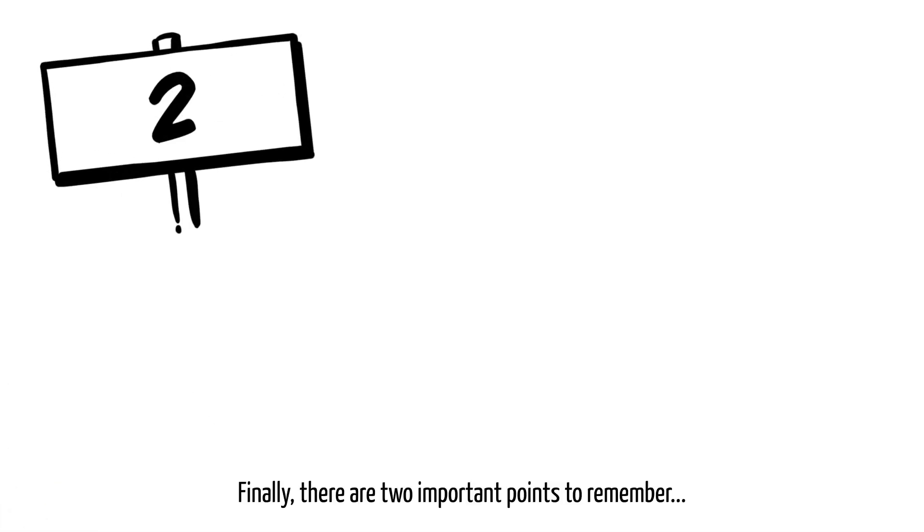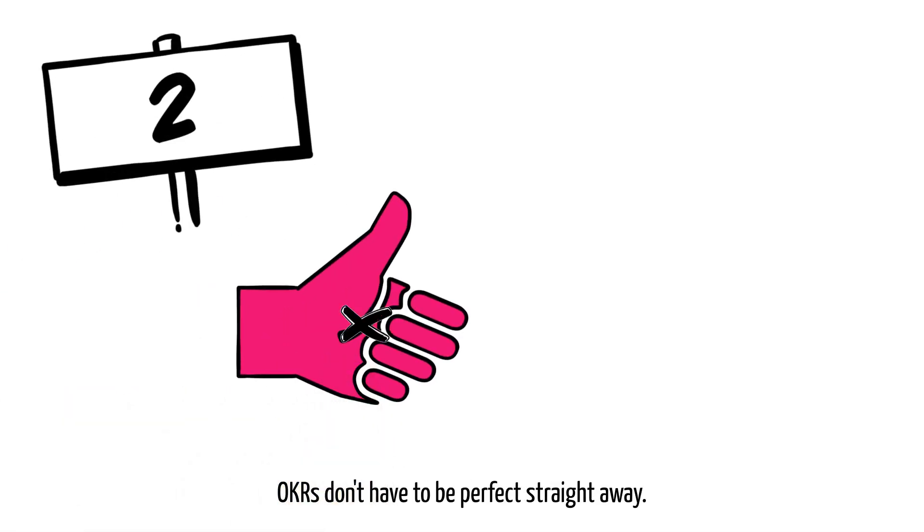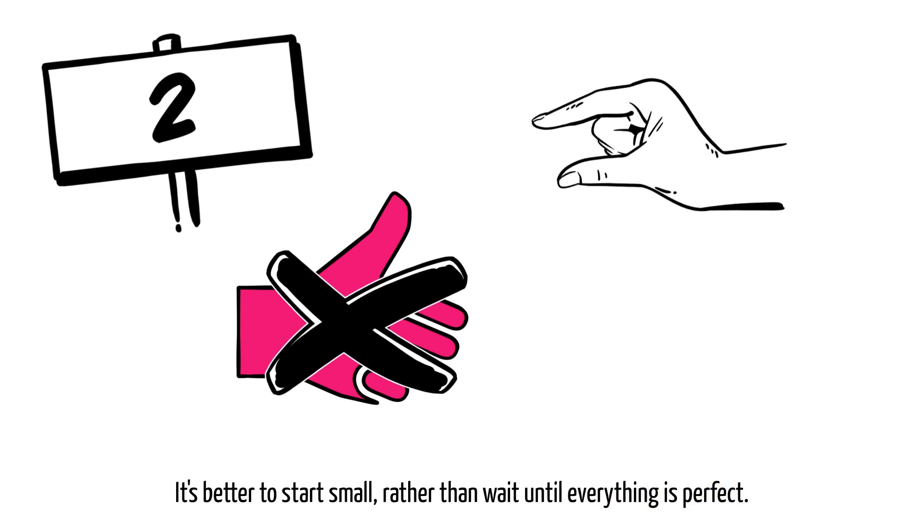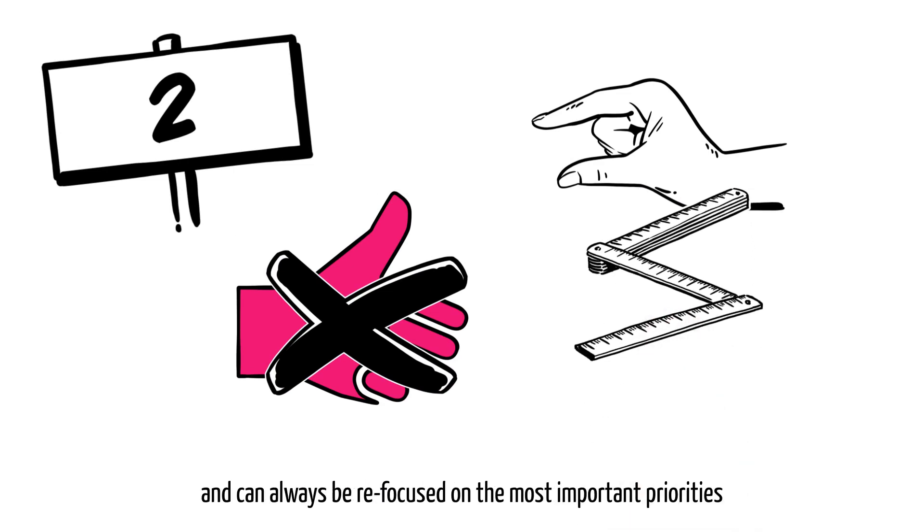Finally, there are two important points to remember. OKRs don't have to be perfect straight away. It's better to start small rather than wait until everything is perfect. Short cycles allow for quick adjustment and can always be refocused on the most important priorities.